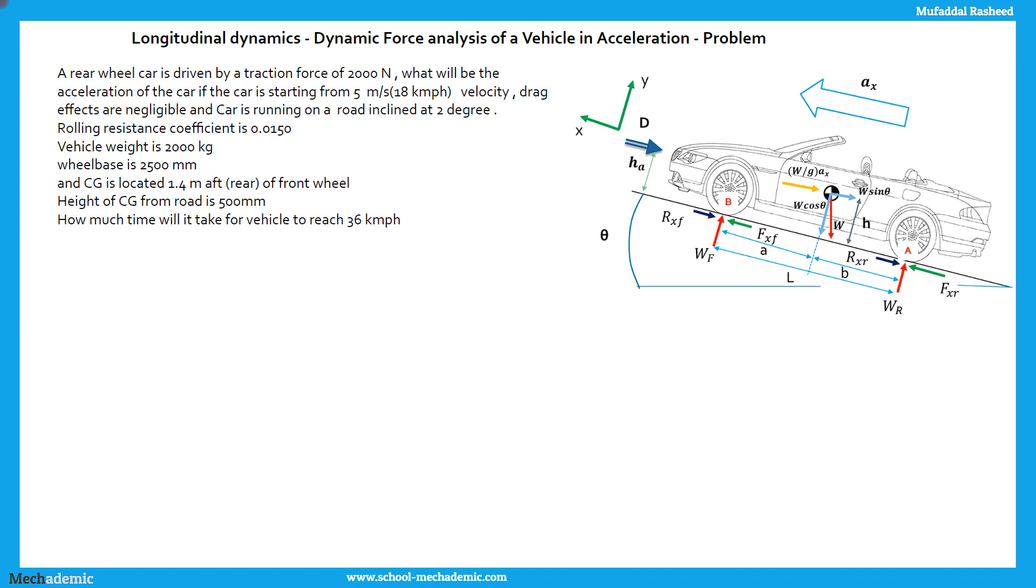The initial velocity of the vehicle is 5 meters per second or 18 kilometers per hour. Drag effects are negligible since speed is low and the car is running on a road inclined at 2 degrees. So theta over here is 2 degrees. Rolling resistance coefficient to be considered is 0.0150. Total vehicle weight is 2000 kg and that vehicle weight acts at the center of gravity as shown over here by W, red color arrow acting downwards.